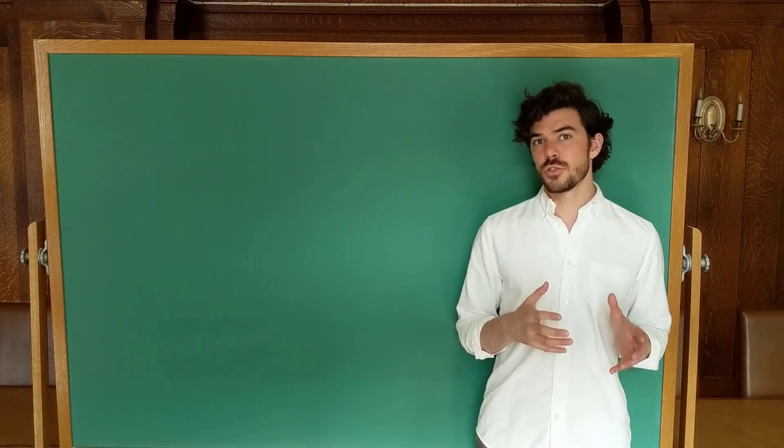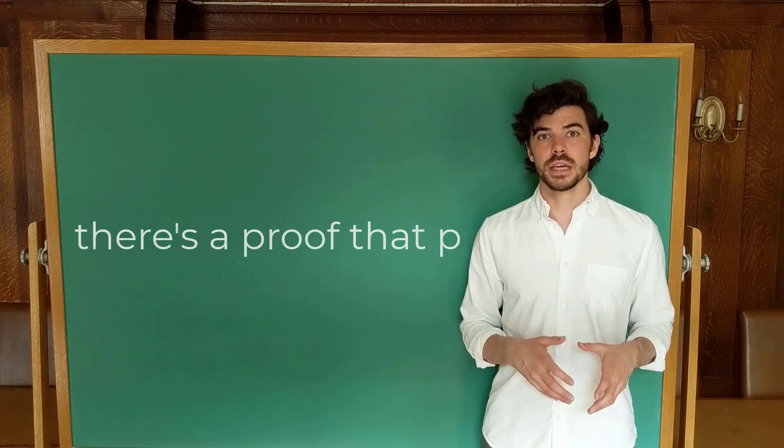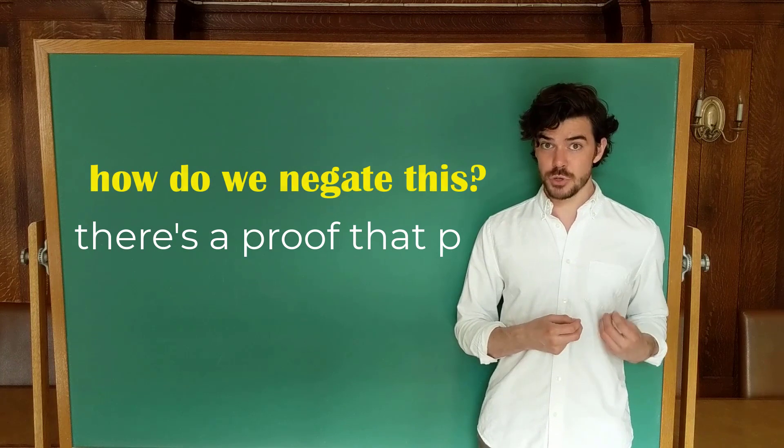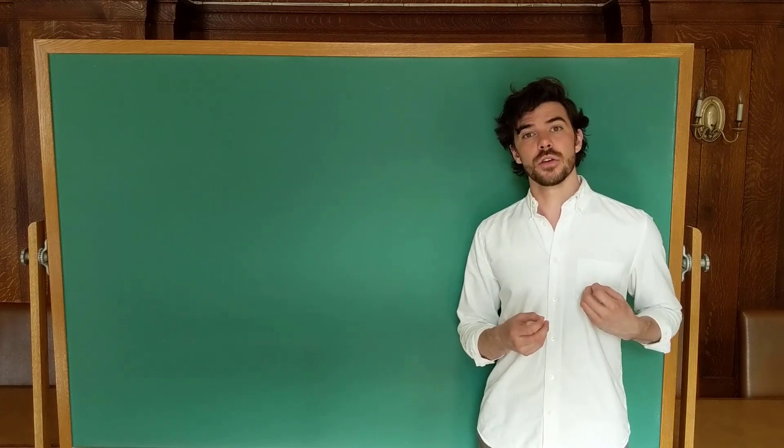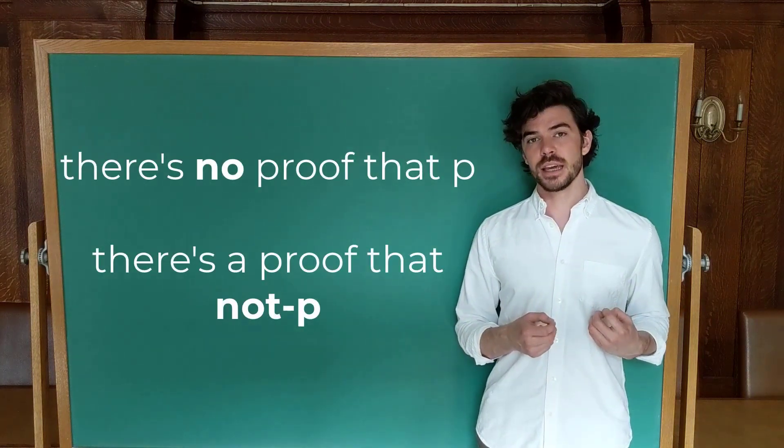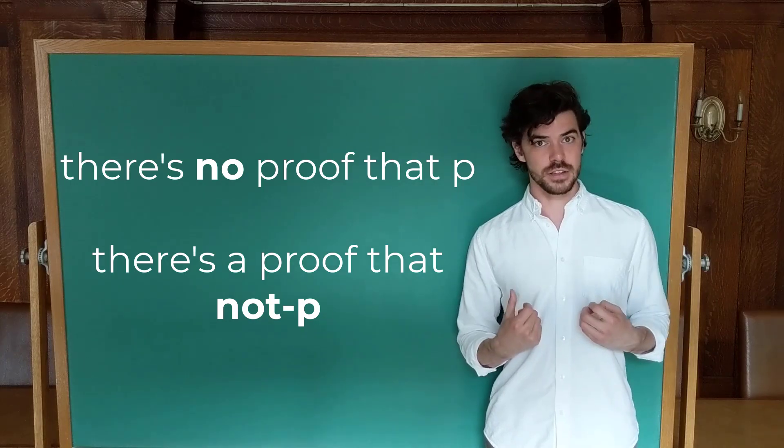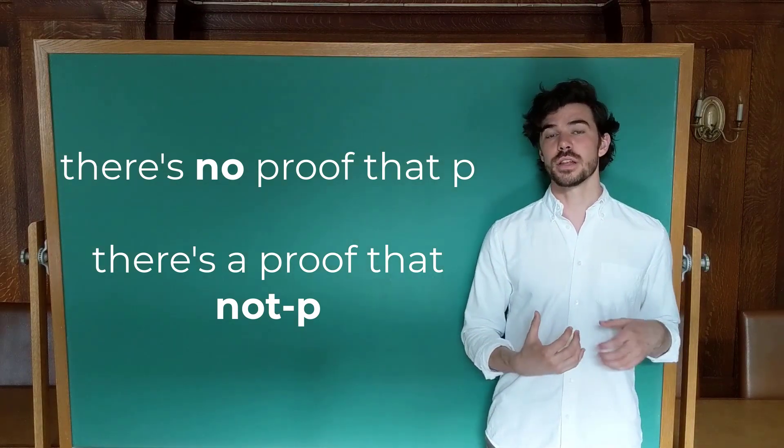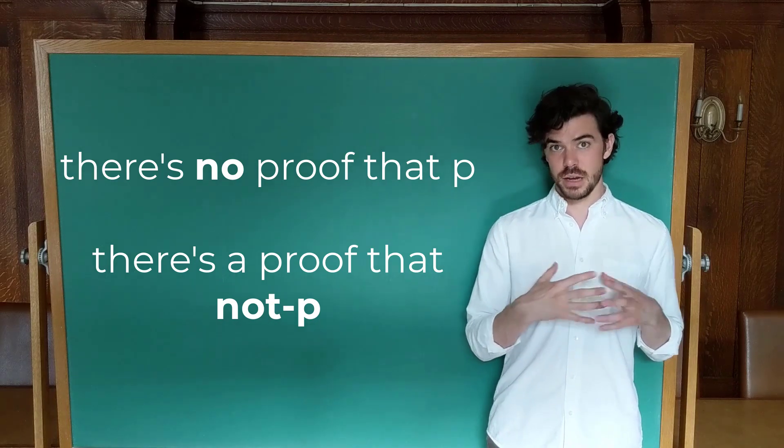If we read P in the stronger sense of provably P, then we wind up in an interesting situation with respect to negation because now we have two options. Is it that we don't have a proof of P, in which case the negation goes at the front of the sentence, or is that we have a proof that not P, in which case the negation goes on the P embedded in this?